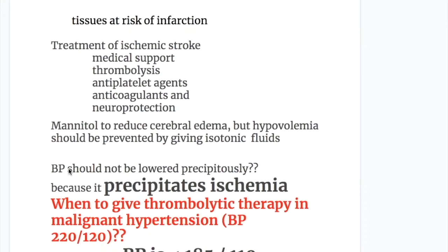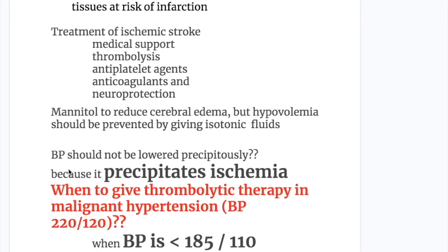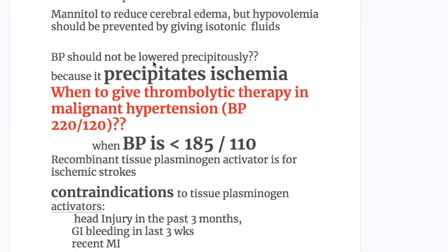Treatment after ischemic stroke includes medical support, thrombolysis, antiplatelet agents, anticoagulants, and neuroprotection. Mannitol is used to reduce cerebral edema, but hypovolemia should be prevented by giving isotonic fluid. Blood pressure should not be lowered precipitously, because doing so precipitates ischemia.